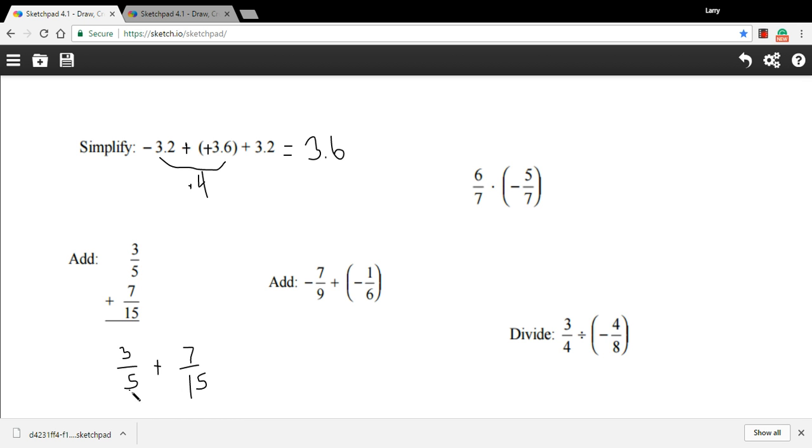We've got a problem because we don't have the same denominators - we've got a 5 and a 15. The trick is that you can multiply by any form of 1. One can be 2 over 2, or 3 over 3, or anything over itself. In this case, I'll multiply by 3 over 3. I picked that because when you multiply fractions, you multiply across the top and across the bottom, and I'll end up with 15 on the bottom.